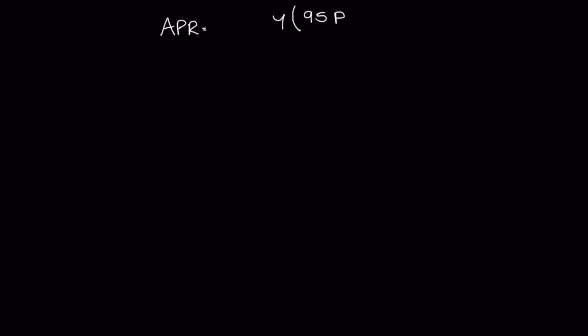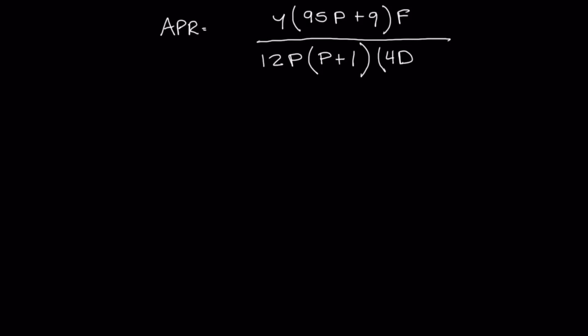The equation for APR is a little lengthy but stay with me. APR equals Y multiplied by (95 times P plus 9), multiplied by F, divided by 12 multiplied by P multiplied by (P plus 1) multiplied by (4D plus F). This looks like a mess right now, so let's go through what each variable means.